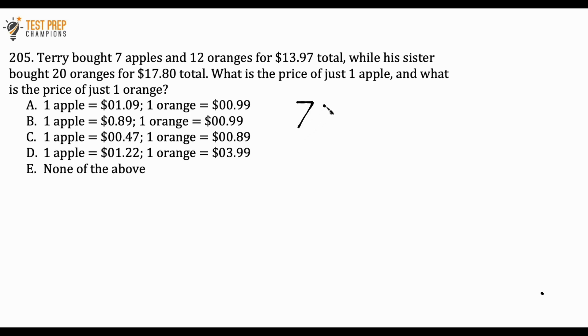One comes from the first piece of information we have here. We can say that 7A for seven apples plus 12 oranges equals 13.97. Instead of writing an O for oranges, I'm going to put an R, because if I write 12 O, I might forget this is 12 O and think this is 120. So I'm going to put R for oranges so we don't think this is 120. So we have 7A plus 12R equals 13.97. This is the first equation we can write.